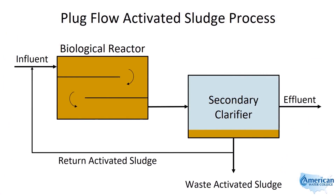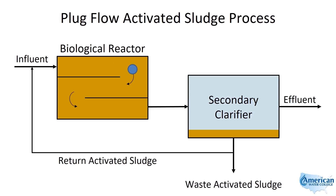The first configuration we'll look at is the plug flow activated sludge process. Flow enters one end and leaves at the opposite end, moving uniformly through the basin. The BOD concentration and the DO uptake rate will get smaller and smaller as the water moves through the basin. The total suspended solids and the volatile suspended solids will increase farther down the length of the basin as the bacteria grow and reproduce.